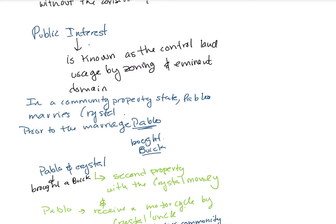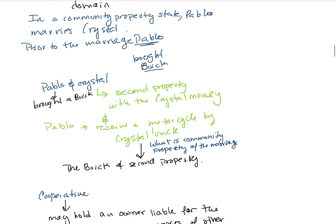In a community property state, if Pablo marries Crystal, property acquired before the marriage belongs to Pablo alone. Property purchased during the marriage — such as a second property or a motorcycle received as a gift — is treated differently. The second property bought during the marriage is community property, but the motorcycle is not included because it was given as a gift.